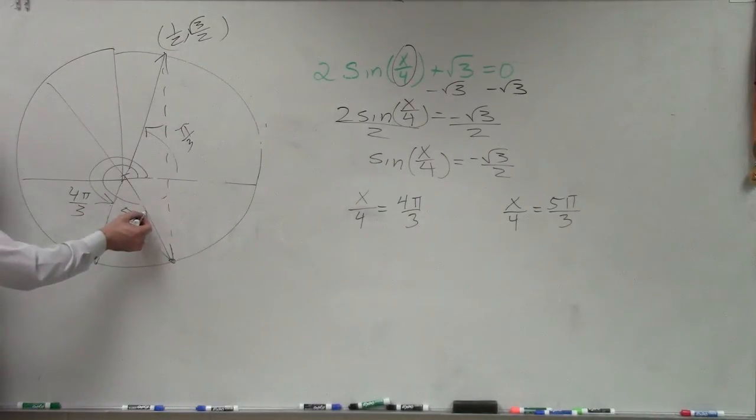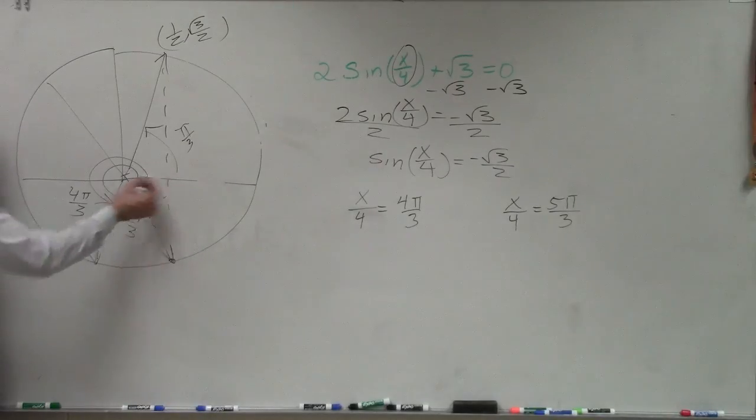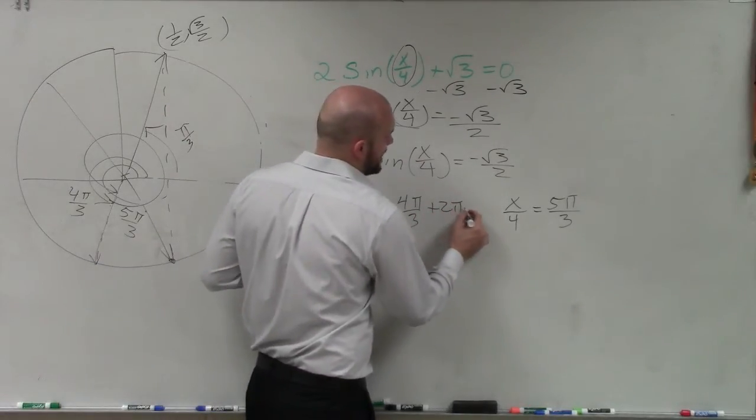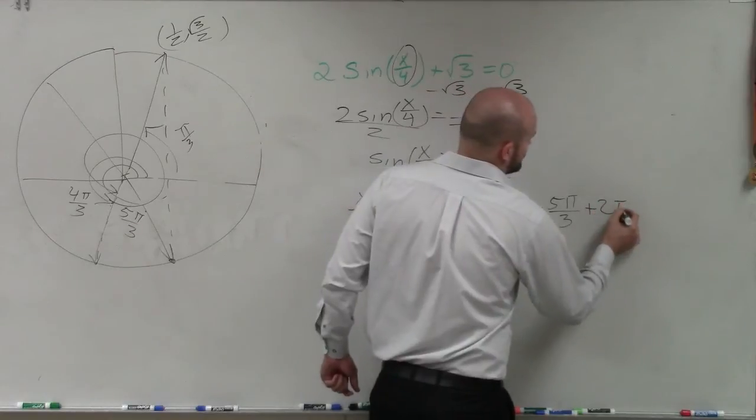So I can't just say add pi thirds. But I'm going to have to add 2 pi to get to the next solution, and you're going to have to do that with both of them. So I'll add 2 pi n plus 2 pi n.